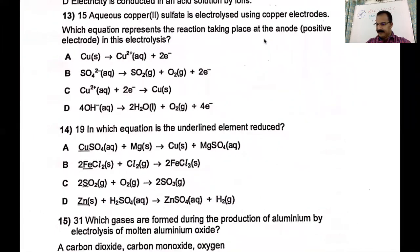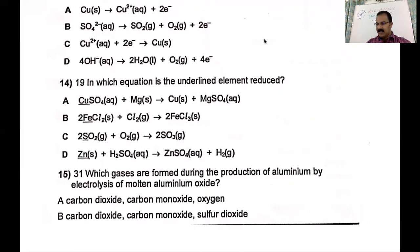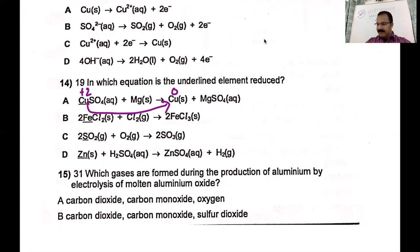Which equation shows the underlined element being reduced? For the first one, the element has charge plus two (from sulfate minus two), and on the right side it is zero — all elements in elemental state have zero oxidation state. Going from plus two to zero is reduction, so that is reduction. The second shows Fe²⁺ to Fe³⁺ — that is oxidation. Sulfur goes from plus four to plus six — also oxidation. Zinc goes from zero to plus two — also oxidation. So the only reduction reaction is the first one, and the answer is A.